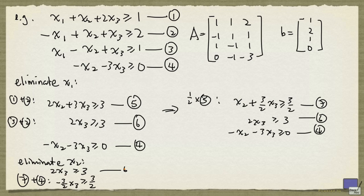So this is 6, and this is a new inequality, we'll give it label 8. And now we can see that if we take 3 quarters times 6 plus 8, we'll get 0 greater than or equal to 15 over 4, which is a contradiction.